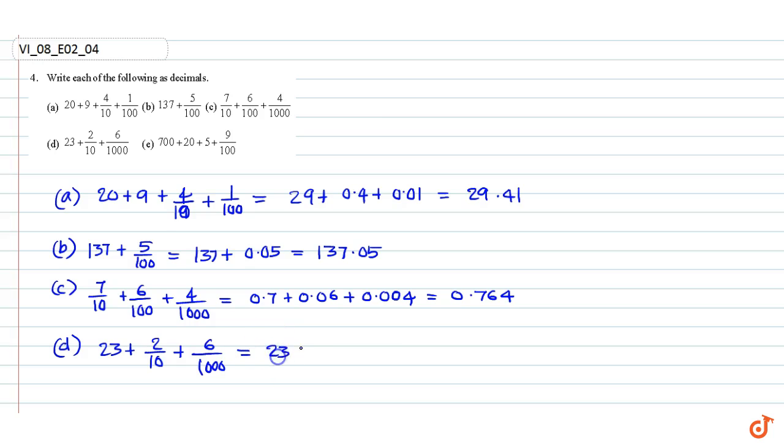Part (d): 23 plus 2 by 10 plus 6 by 1000. This is equal to 23 plus 0.2 plus 0.006, equal to 23 plus 0.206, equal to 23.206.